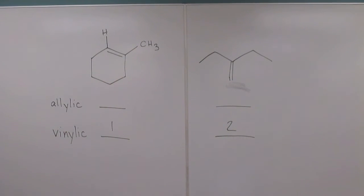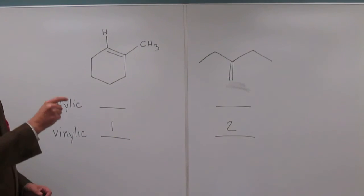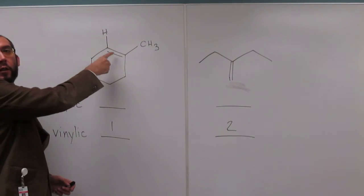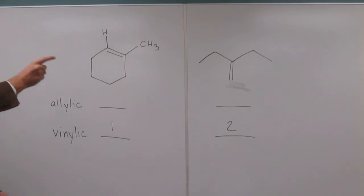Okay, so allylic hydrogens aren't directly attached to the double bond, but you move one carbon away from the double bond and they're attached to that carbon. So we call that carbon the alpha carbon. The carbon one away from the double bond is the alpha carbon. So we find allylic hydrogens on the alpha carbons.